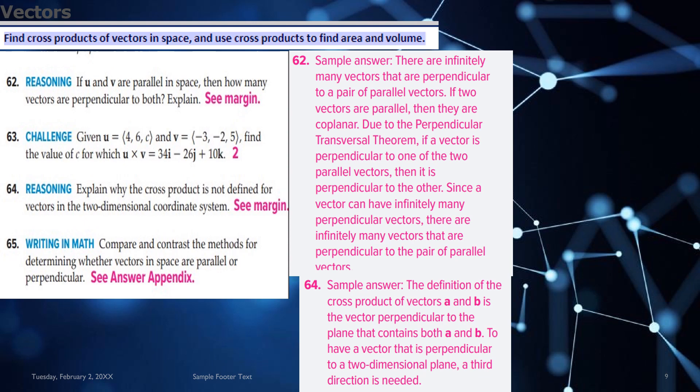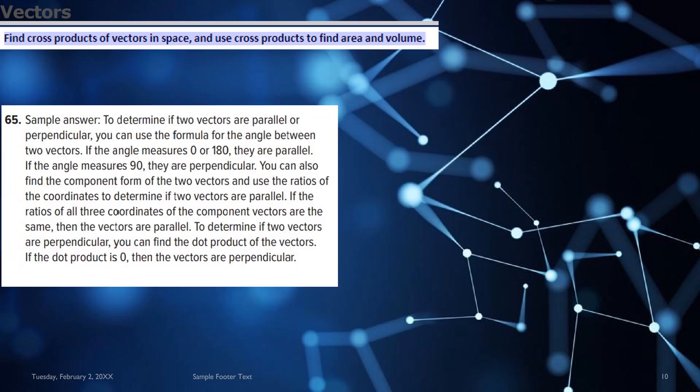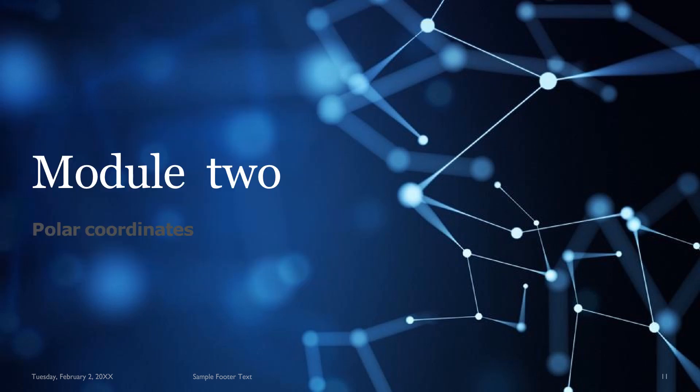Then moving on, you have cross product of vectors in space and you use the cross product to find the area in volume. So the answers are provided in pink for question 62 to 65. 65 solution is given here.